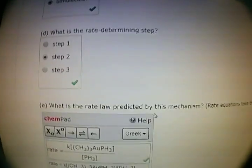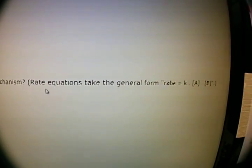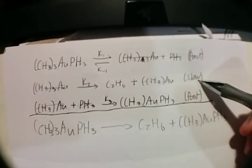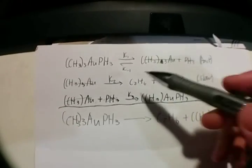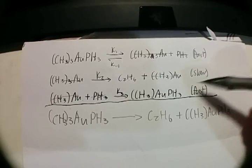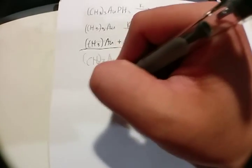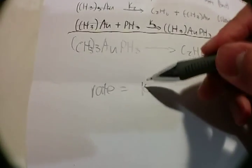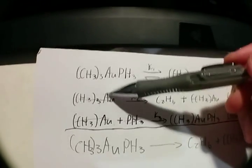The next question asks for the rate law predicted by this mechanism. Rate equations take the general form of rate = k[reactants]. To start, the rate law is derived from the slowest step. Whatever the slowest equation is, we use that molecule. The rate for the slow reaction would be: rate = k times the reactant in the slowest reaction, which is CH3(3)AU.